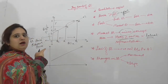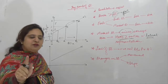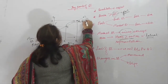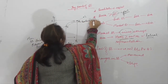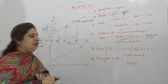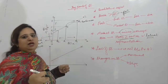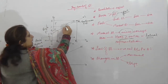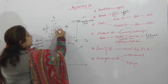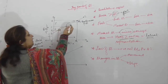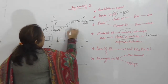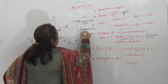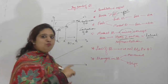जैसे ही price बढ़ी — A position से B position पर move होना — upwards on the same supply curve। Other factors constant हैं, सिर्फ own price of a commodity बदल रही है। This is known as Extension of Supply। जैसे ही price कम हुई — C position पर आ गए — we move downwards on the supply curve, quantity supplied कम होगी। This is known as Contraction of Supply।